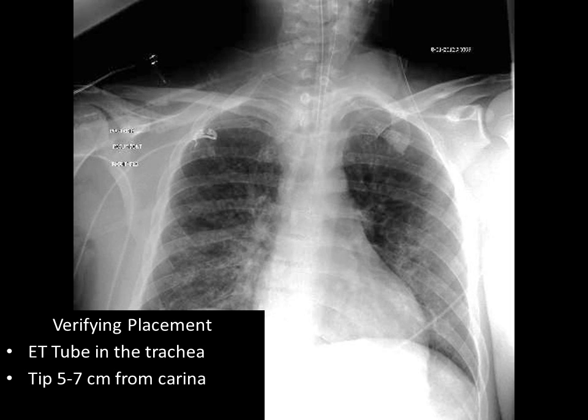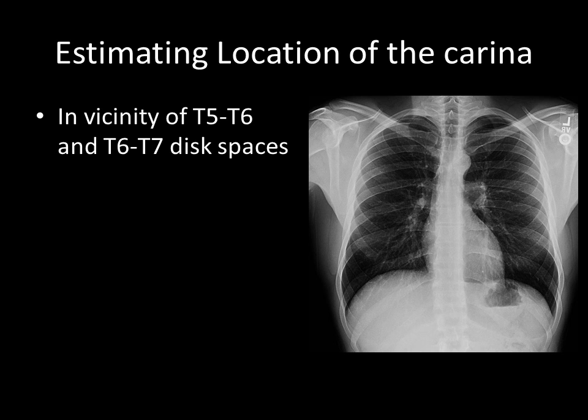A chest x-ray is often taken to verify placement after the ET tube has been placed. You want to verify that the ET tube is within the trachea by seeing that the ET tube overlies the hypodense column of the trachea. You're also going to want to verify that the tip of the ET tube is within 5 to 7 centimeters of the carina. Sometimes the carina is not visible in a chest film; you can approximate its location by looking for the T5-T6 and T6-T7 disk spaces.